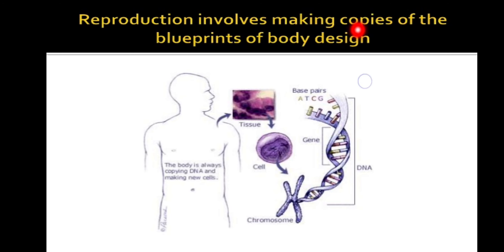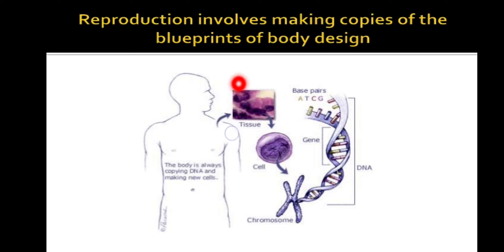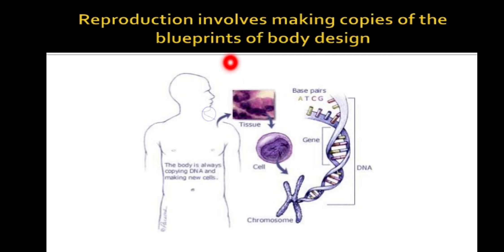Reproduction involves making copies of the blueprint of body design. The word 'blueprint' here is very important — blueprint represents DNA. So what happens in reproduction? Reproduction is the process in which copies of the DNA are made as the cell divides. Just like a Xerox machine gives exact copies, but the chemical process in your body by which DNA is copied does not produce 100% exactly similar copies. So in reproduction, copies of the blueprint — that is, copies of DNA — are being made.